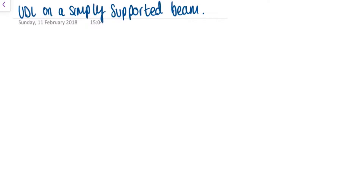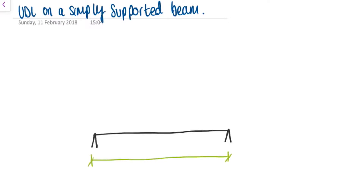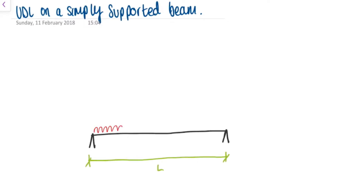In this video we are going to consider a simply supported beam of length L with a UDL acting on it, which is W, which will have the units of kilonewton per metre, and so the length is in metres.